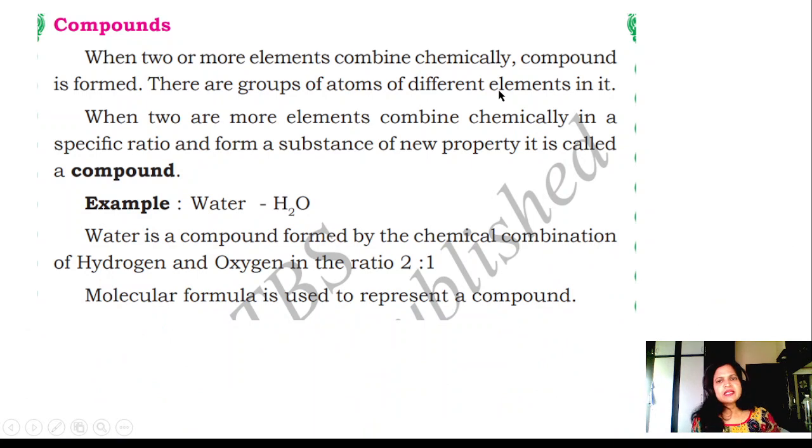Compounds: When two or more elements combine chemically, compound is formed. There are groups of atoms of different elements in it. When two or more elements combine chemically in specific ratio and form a substance of new property, it is called compound.